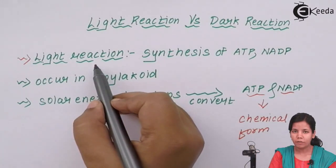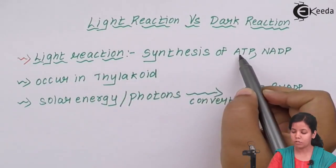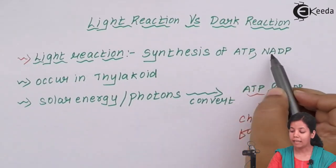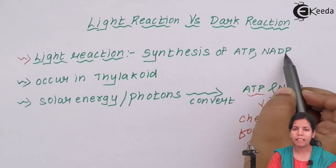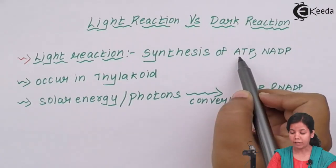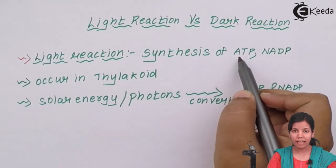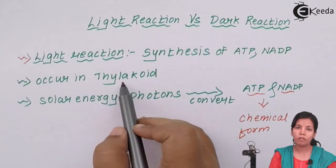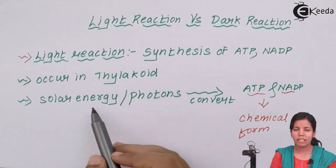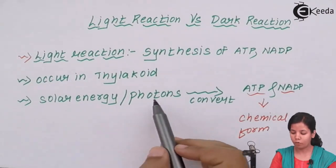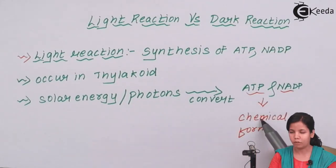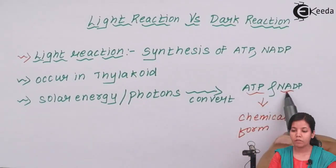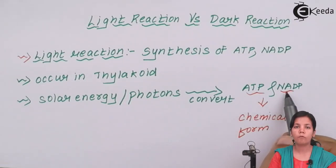Light reaction is basically the synthesis of adenosine triphosphate (ATP) and nicotinamide adenine dinucleotide (NADP). When ATP breaks down, ADP — adenosine diphosphate — and AMP — adenosine monophosphate — are formed. Light reaction takes place in the thylakoid of the chloroplast. It is essentially the conversion of solar energy or photons from the sun into chemical energy in the form of ATP and NADP, and it takes place via cyclic and non-cyclic photophosphorylation.